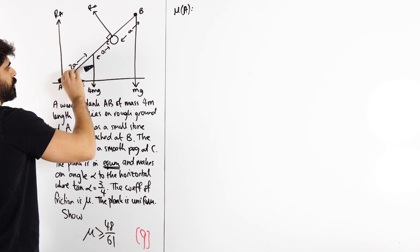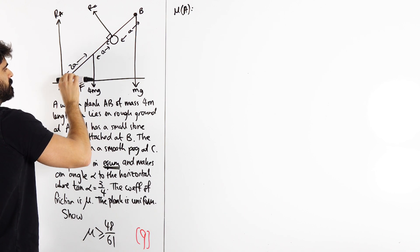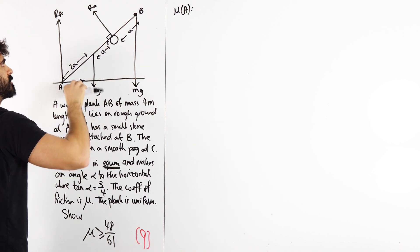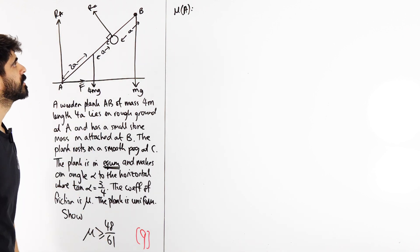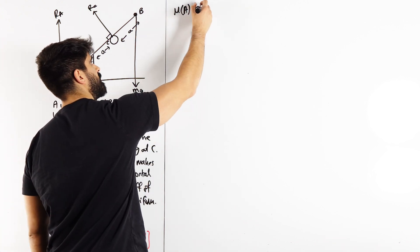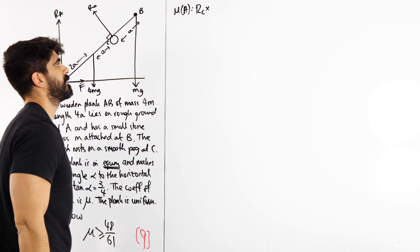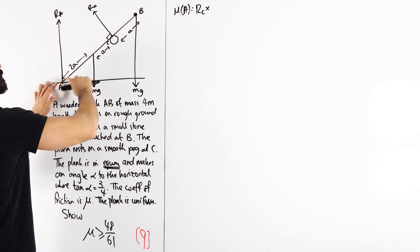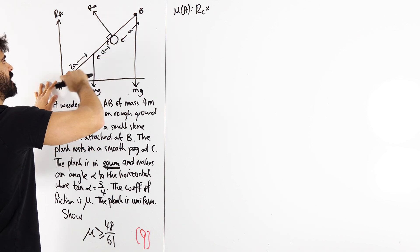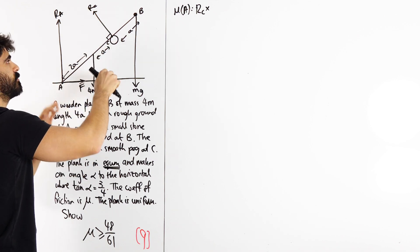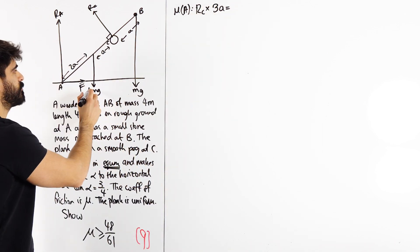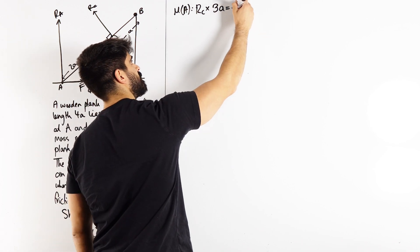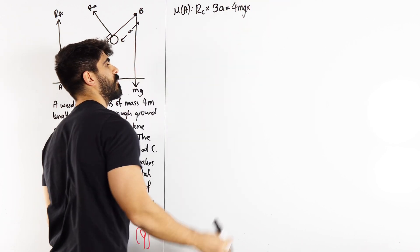Now 4MG is pointing down from A. That means it's a clockwise moment. And same with the MG, it's a clockwise moment. It's actually only RC that is an anti-clockwise moment. So we're going to write down the force RC times this perpendicular distance from A. But because we have this 90 degrees, it's already at its shortest distance. So we have 2A plus A, which is 3A.